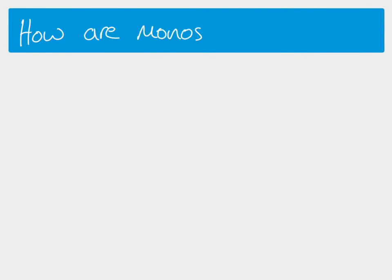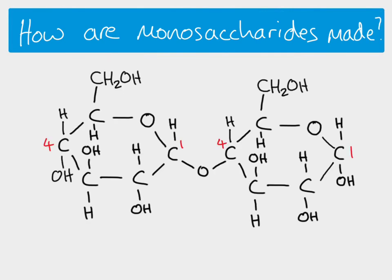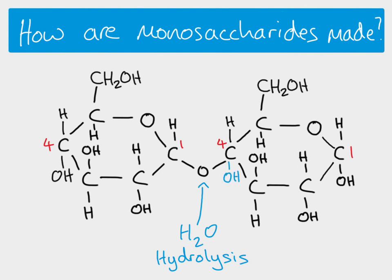To make our monosaccharides again, it's basically the same process in reverse. Here is the maltose molecule we made, showing the 1-4 glycosidic bond. This is a hydrolysis reaction — when we made maltose it was a condensation reaction and water was removed; now we add water: two hydrogens and an oxygen. A hydroxyl group joins to one of the carbons, that bond breaks, and the hydrogen joins to the oxygen to make a second hydroxyl group.